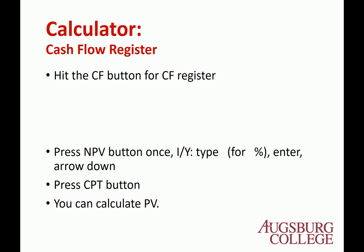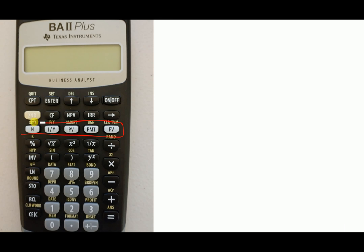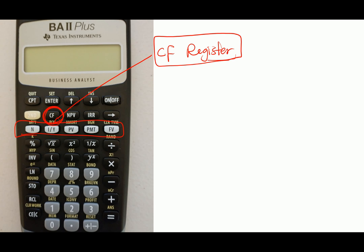Now let's use the calculator. We cannot use the TVM function here because it is only for lump sum cash flows or special cases. Instead, we use the cash flow register button, which allows you to register cash flows and then compute present value or future value.